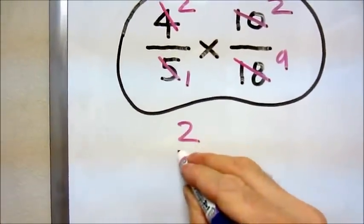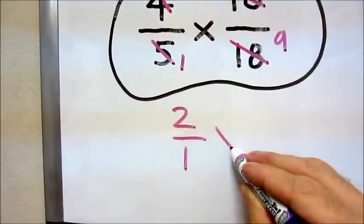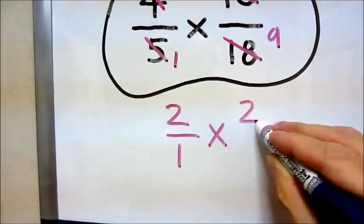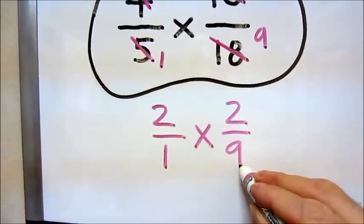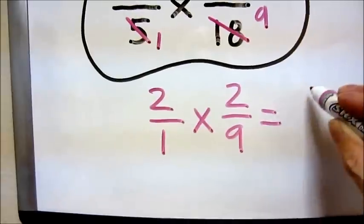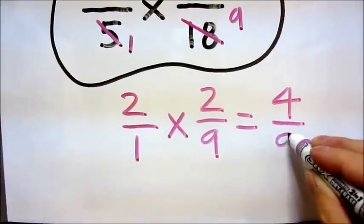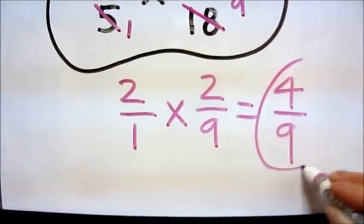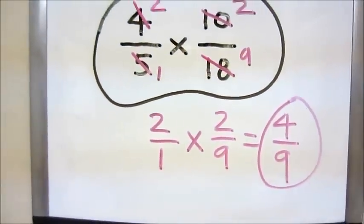We get 2/1 times 2/9, which equals 4/9. And since we cross-canceled, our answer is in simplest form.